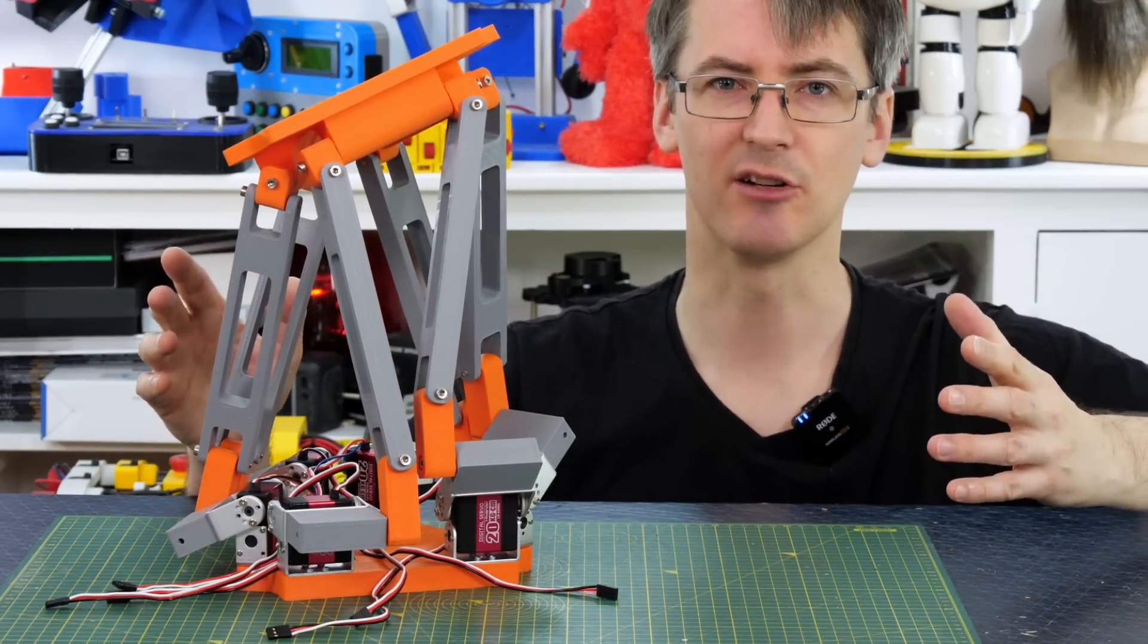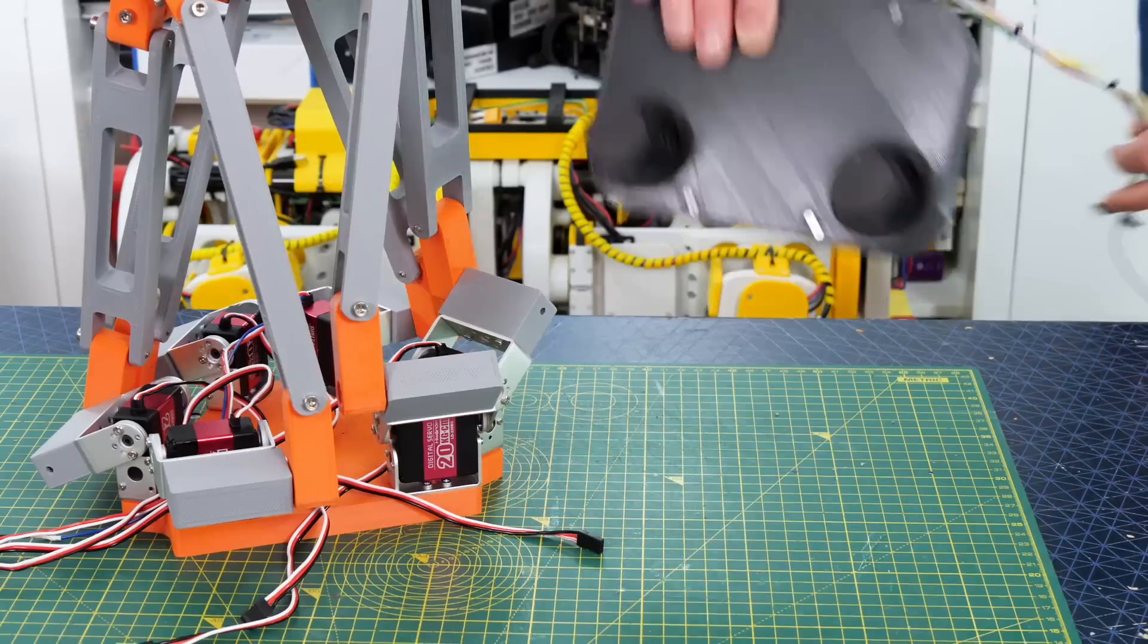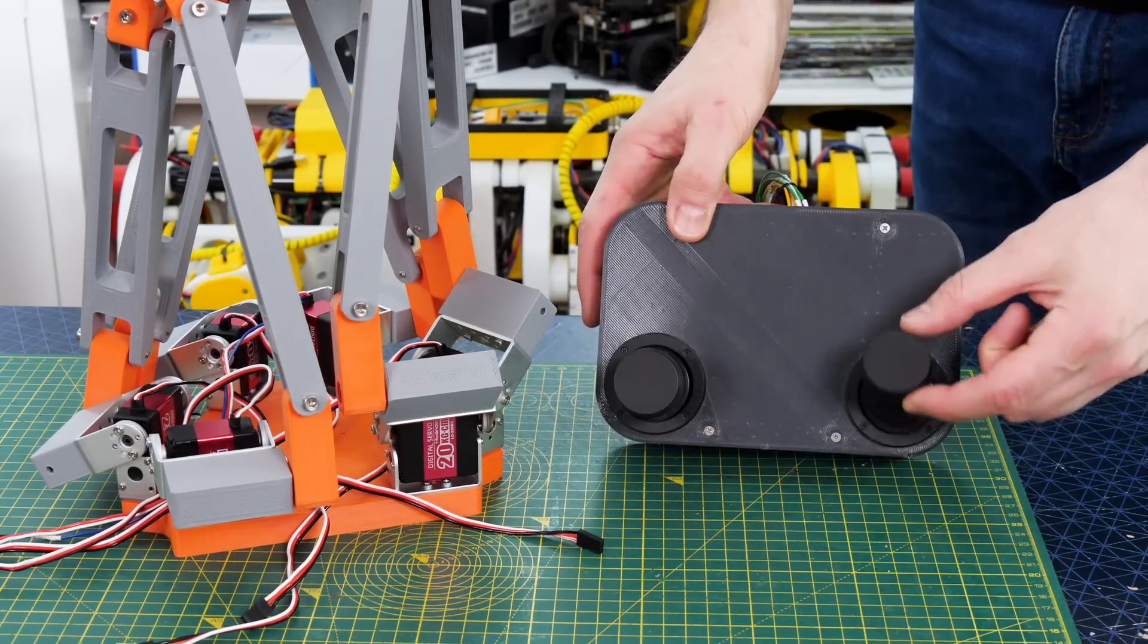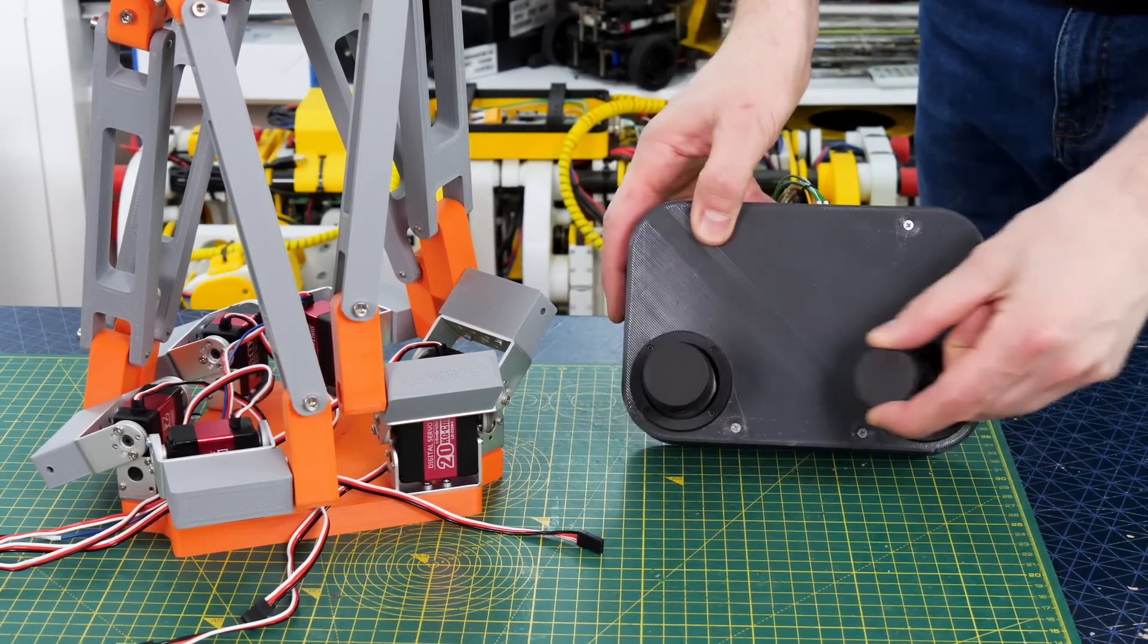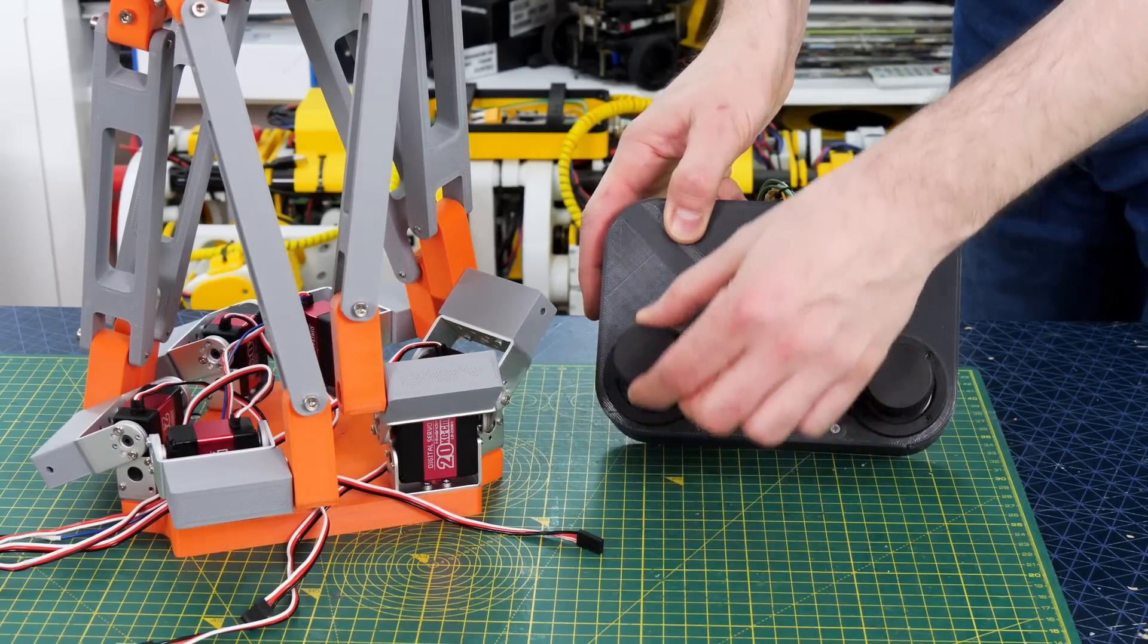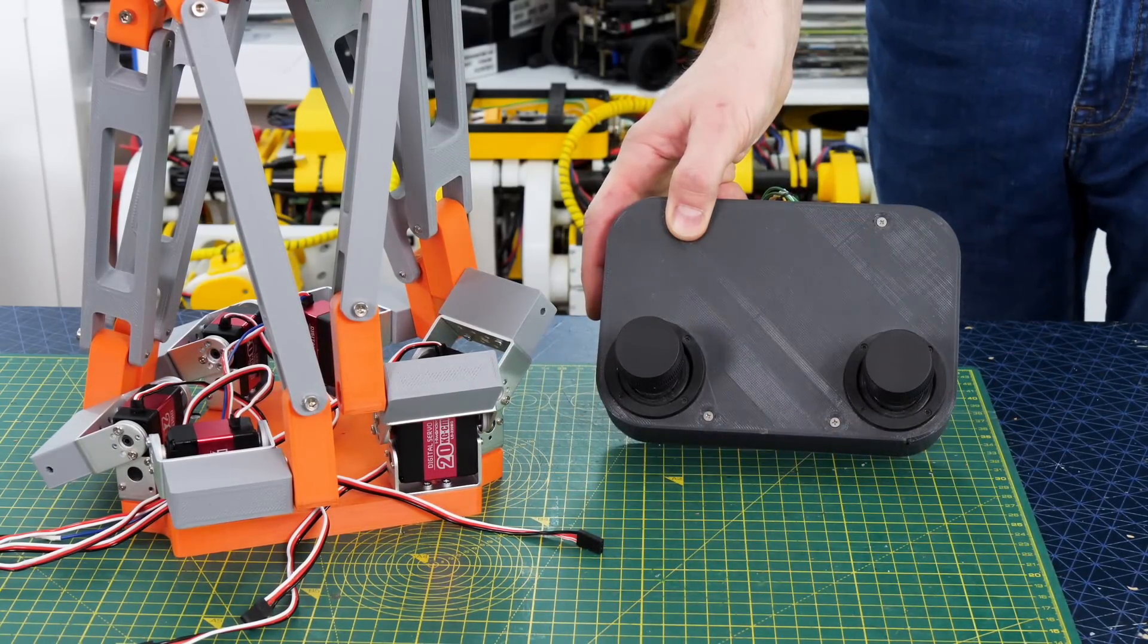So now what we need to do is work out how we're going to control this with some joysticks. So my joysticks of course move up and down and left and right so each one only has two axes, but we need to translate that motion for rotation and translation to the six servos that we have in the mechanism.